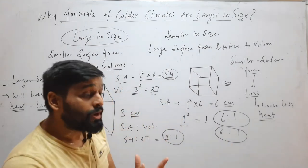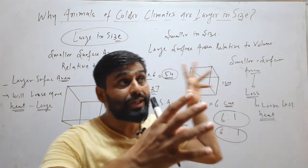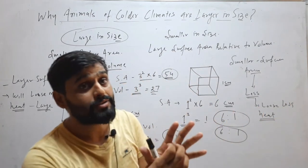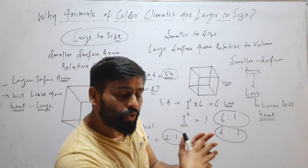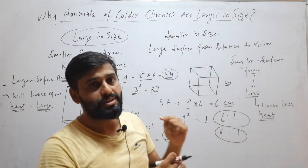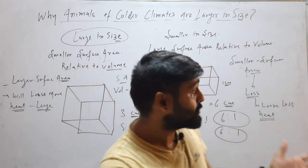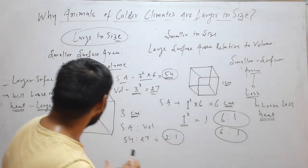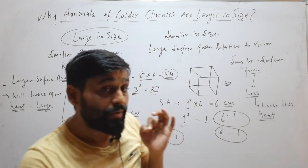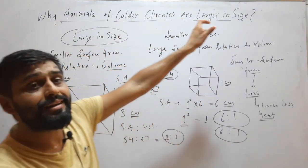Smaller animals have a larger surface area, meaning the area of contact with the external cold environment is large, so they lose more heat. But larger animals have a smaller surface area, so they lose less heat and can survive easily. For organisms which are smaller in size it will be very difficult to survive, and that is why animals of colder climates are larger in size.